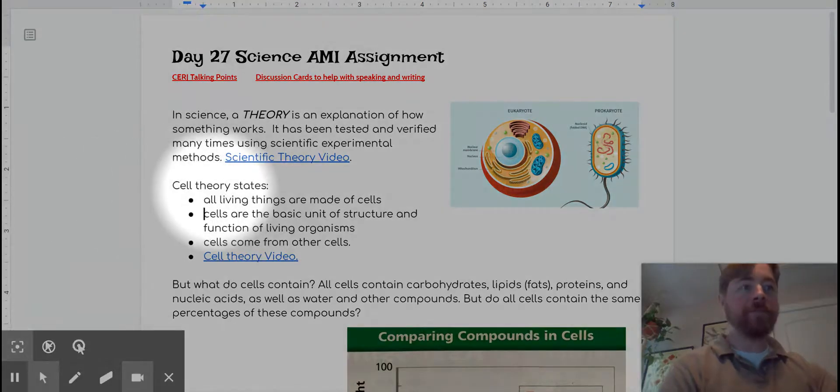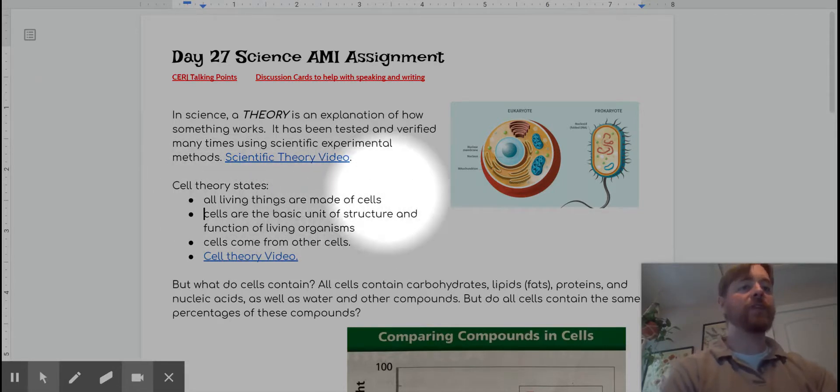Cell theory is a theory and it goes like this. The cell theory has three parts. All living things are made of cells. So whether it's a plant, animal, fungus, bacteria, anything, it's made up of at least one or more cells. Cells are the basic unit of structure and function of living organisms. What that means is there's nothing smaller than a cell or less than a cell that would still be considered living.